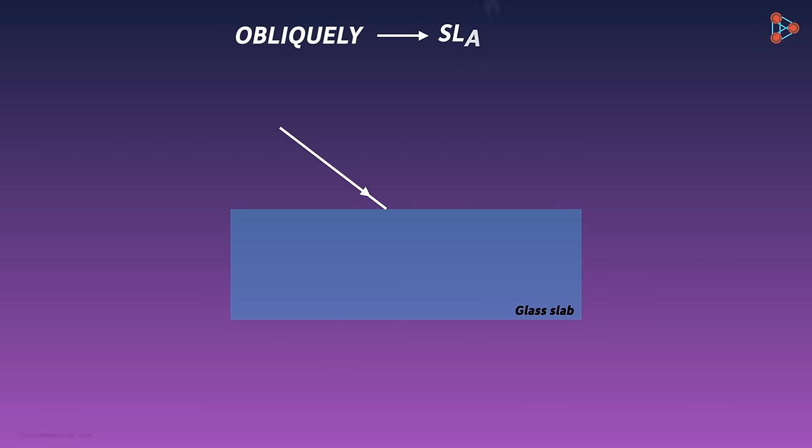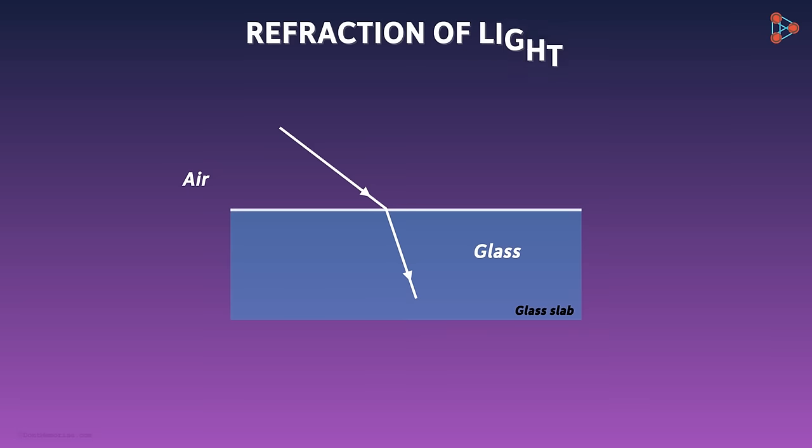It means slant. It implies that the incident ray is neither parallel nor at a right angle to a specified line. Now this light will bend at the boundary of the two media. Here the two media are air and glass. This bending of light at the boundary of the two media is what we call refraction of light.